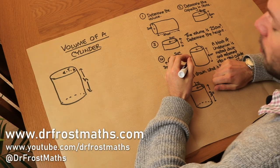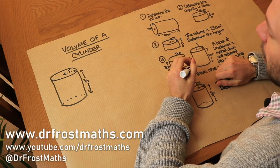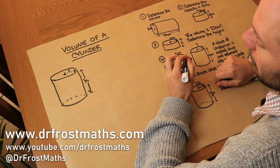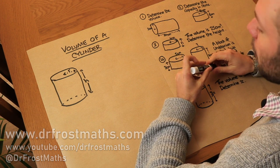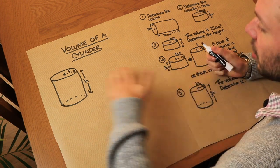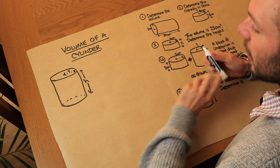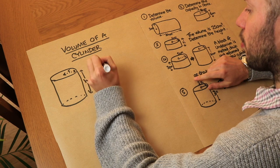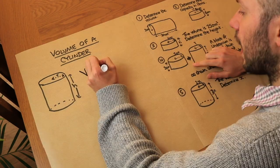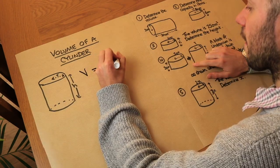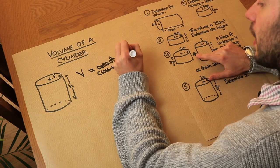Hello and welcome to this video on the volume of a cylinder. Now in a previous video we saw how we could find the volume of a prism, and remember a prism just meant some 3D shape that wherever you chopped it you would see the same cross section. And you remember that the volume of a prism was equal to the area of the cross section multiplied by the length.